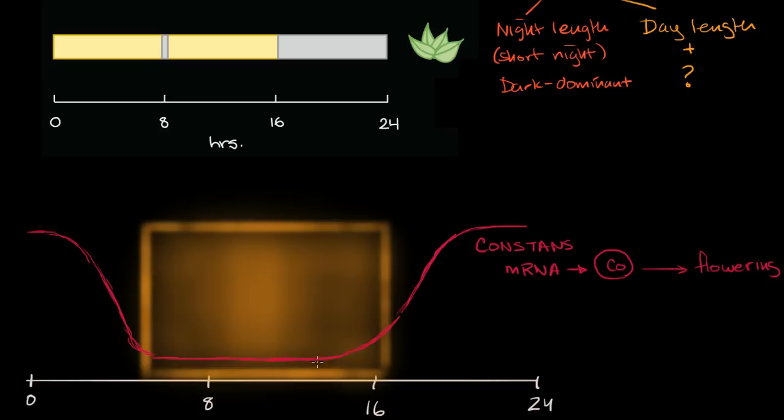But what happens? You might say, okay, well, if this is happening every day, if during the daytime the mRNA levels are low, but then as we get further and further into the day, the mRNA levels go up, and we start producing this constans protein. If you start producing a bunch of this constans protein, why doesn't this thing flower every day?